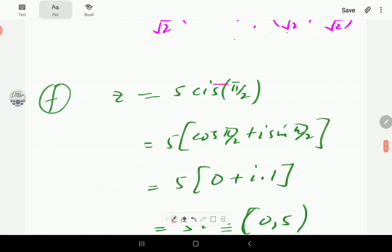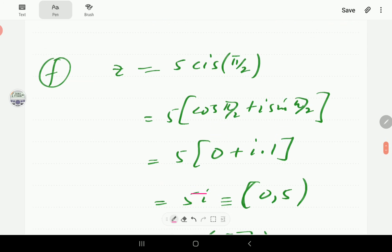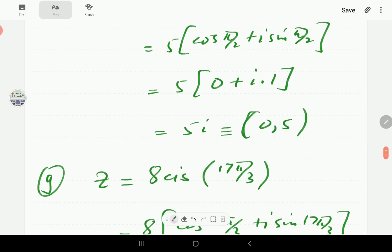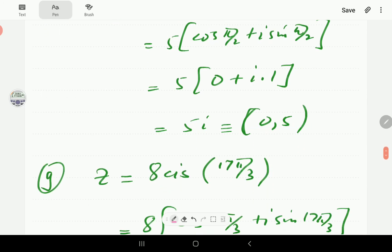Part (f): five cis pi on two. Pi on two is 90 degrees. Cosine 90 is zero, sine 90 is one, so this is just 5i. And the coordinates are zero, five.